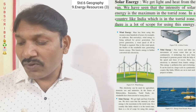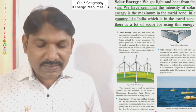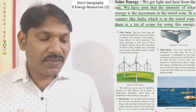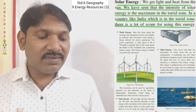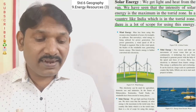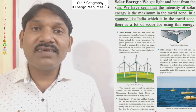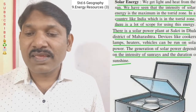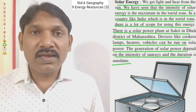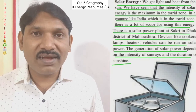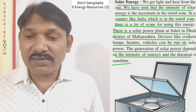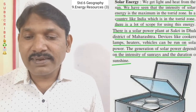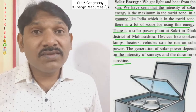Solar energy: we get light and heat from the sun. The intensity of solar energy is maximum in the torrid zone. In a country like India, which is in the torrid zone, there is a lot of scope for using this energy. There is a solar power plant at Sakri in Dhule district of Maharashtra. Devices like cookers, lamps, heaters, and vehicles can be run on solar power.